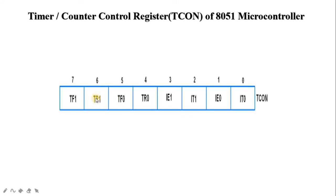TR1 is the 6th bit — timer 1 run control bit. It is set to 1 by program to enable the timer to count, and cleared to 0 by program to halt the timer (does not reset timer operation). TF0 is the 5th bit — timer 0 overflow flag — set when the timer rolls from all 1s to 0, cleared when the processor vectors to execute the interrupt service routine at program address 000B. TR0 is the 4th bit — timer 0 run control bit — set to 1 to enable the timer to count and cleared to 0 to halt the timer.